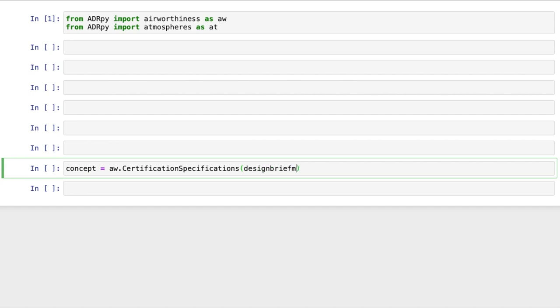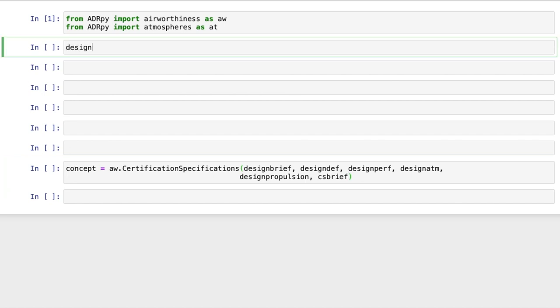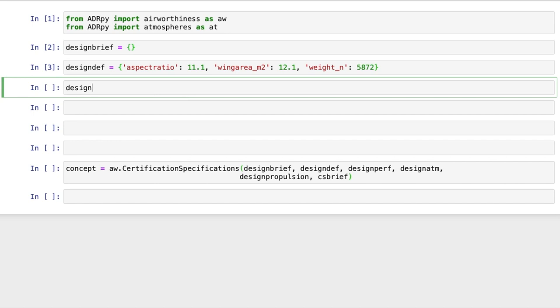Certification Specifications was designed to be broadly analogous to the aircraft concept class, to make it easier to do both constraint analysis and VN calculations on a tentative concept. So we'll have a similar set of dictionaries as inputs, though some can be left blank if, like here, we only do the VN analysis. Next, basic geometry and the maximum takeoff weight are specified via the design definition dictionary entry.